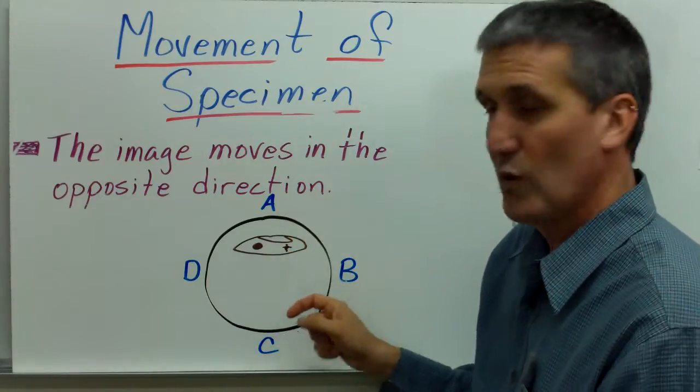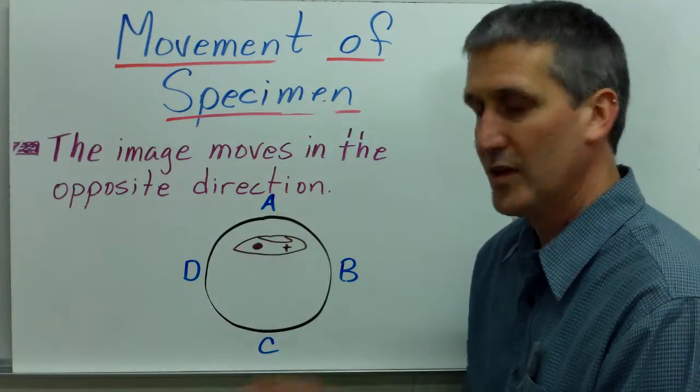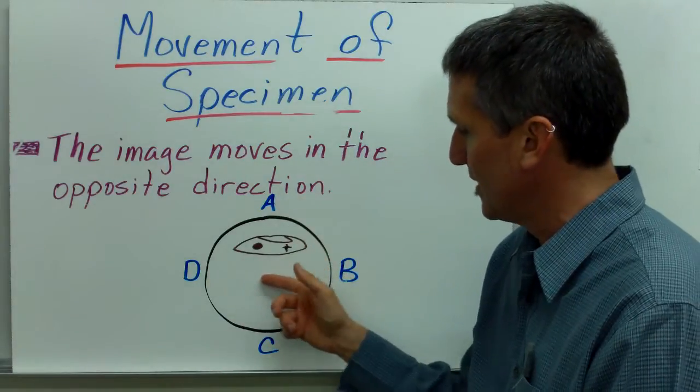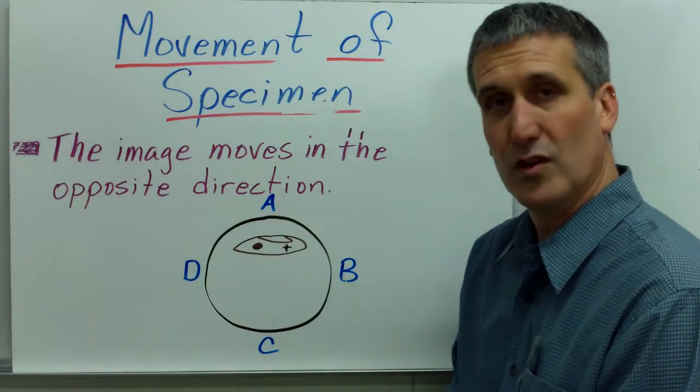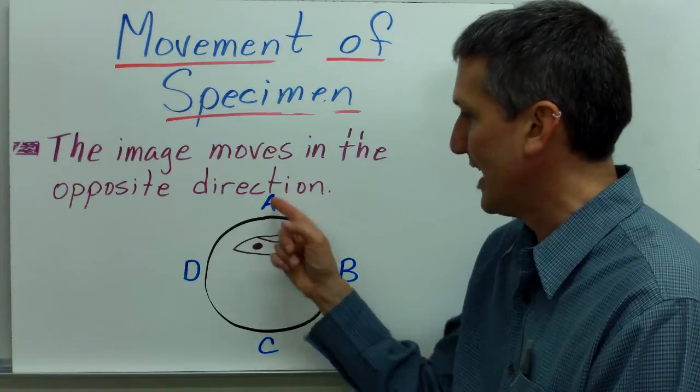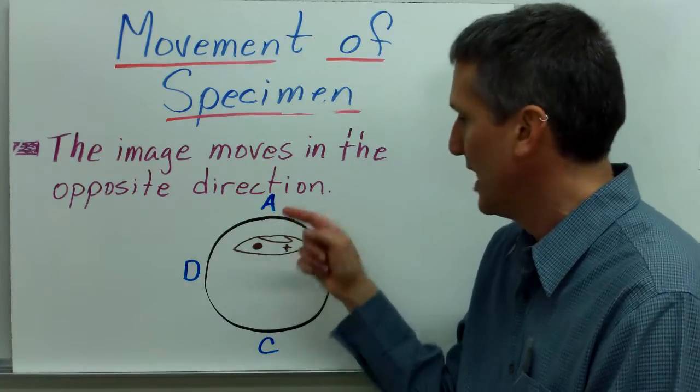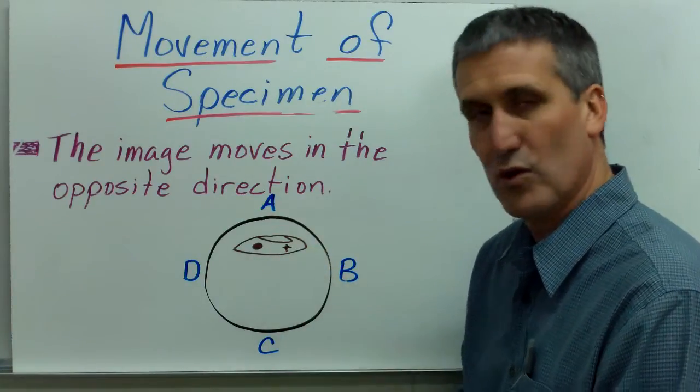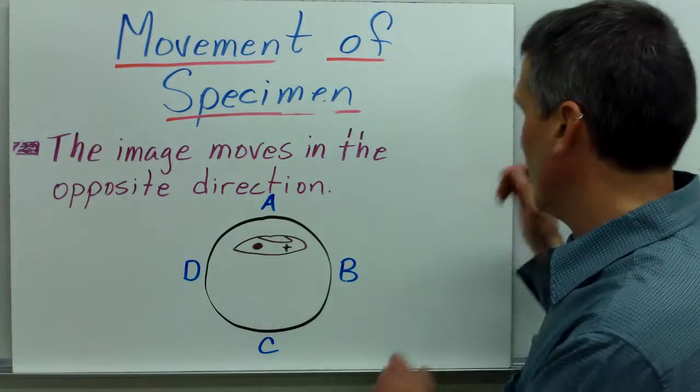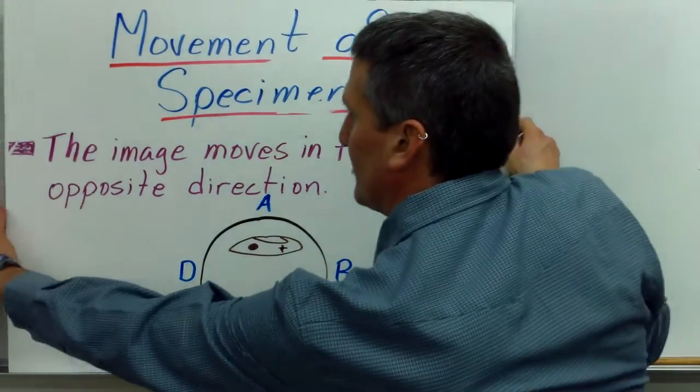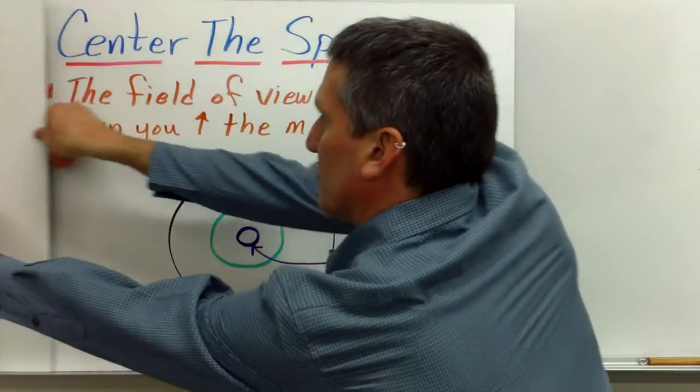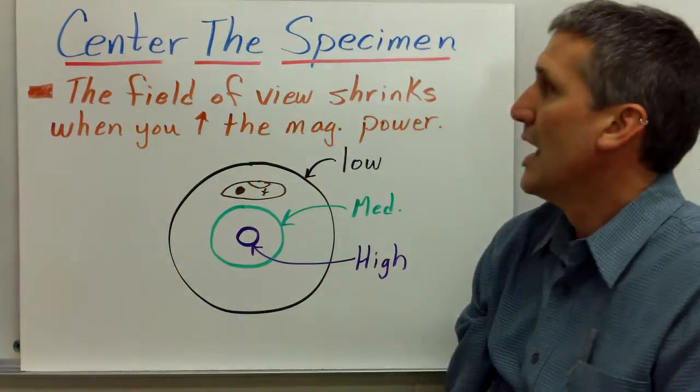So, this example is a quick example here. We have a paramecium here at the edge of the field of view. If we want to move that paramecium towards the center of the field of view, you would actually have to move the slide towards A on the stage in order to get the image to move towards the center of the field of view here.